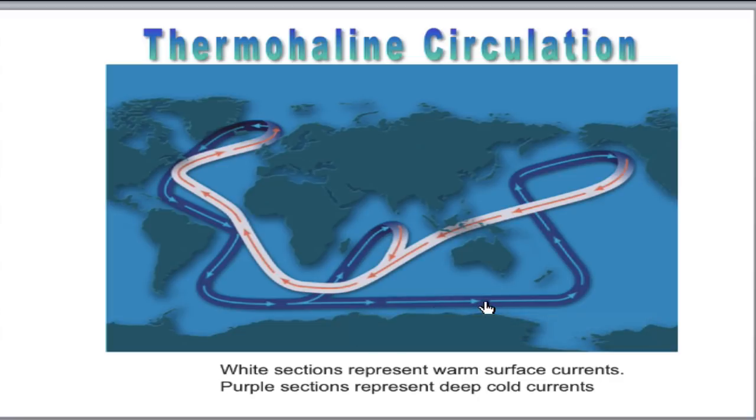Now, the global circulation system, this big, huge mess right here, is also often called the ocean conveyor belt. What it's doing is it's transporting heat throughout the planet. We've talked about that. The white sections on your diagram, those represent surface currents, whereas the purple sections represent the deep, cold ocean currents.